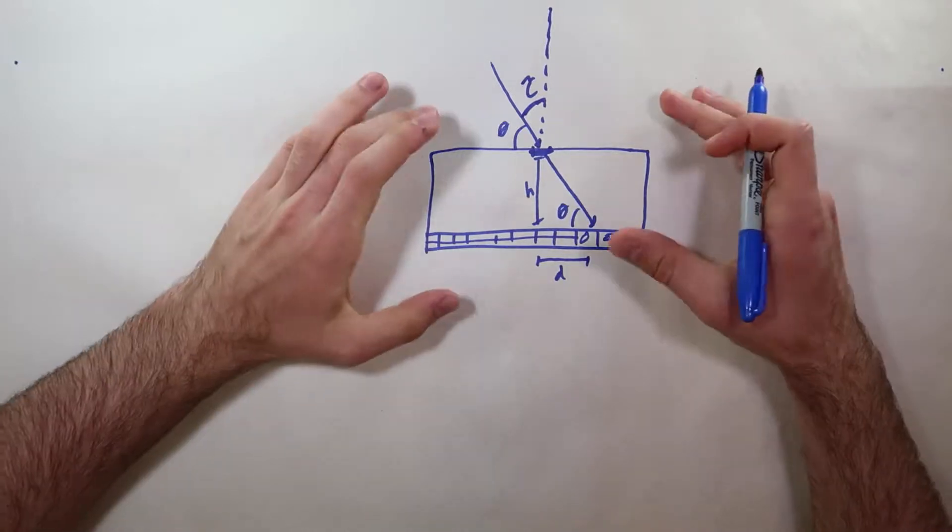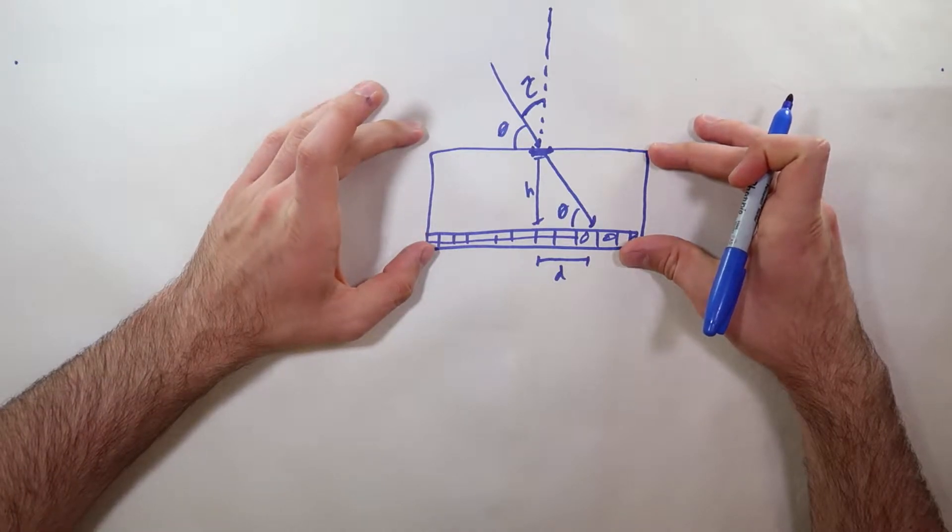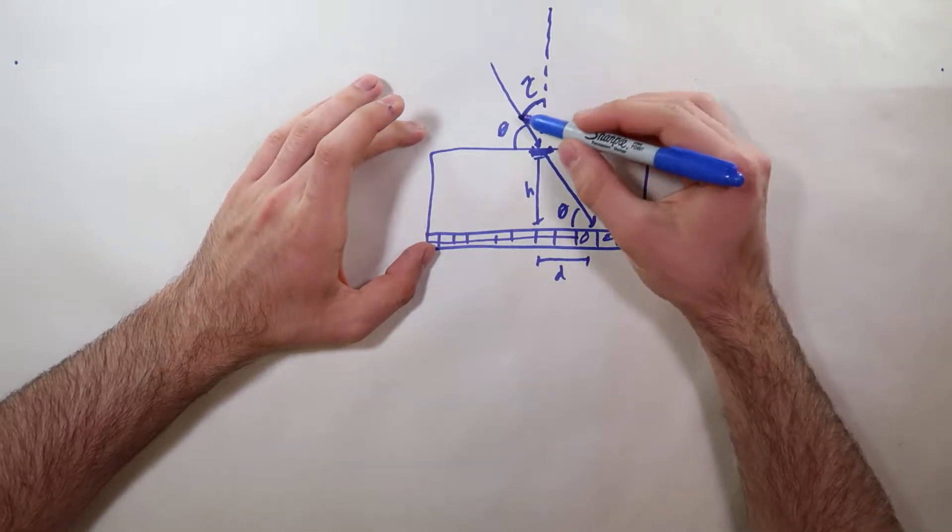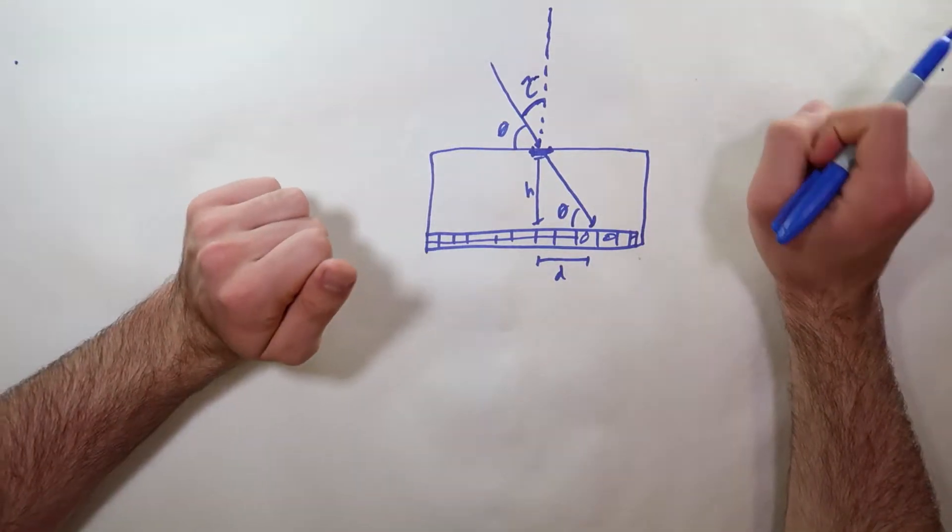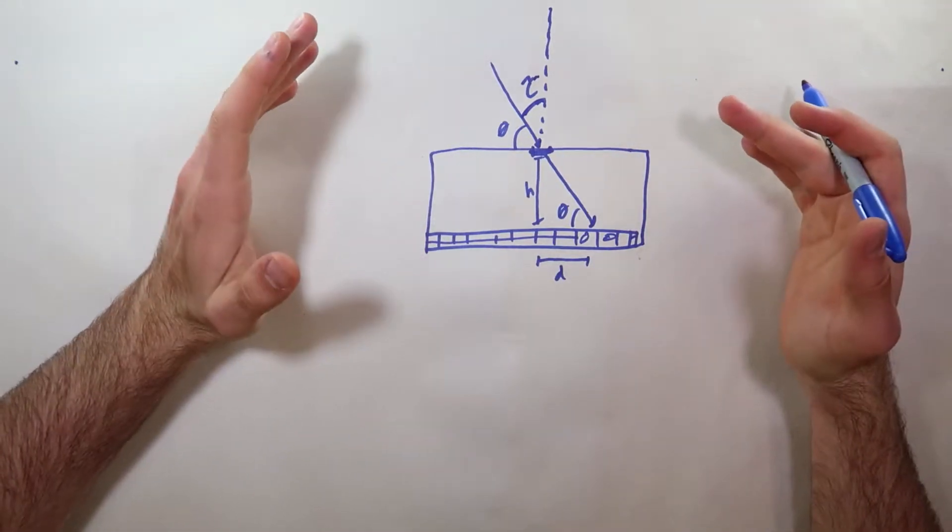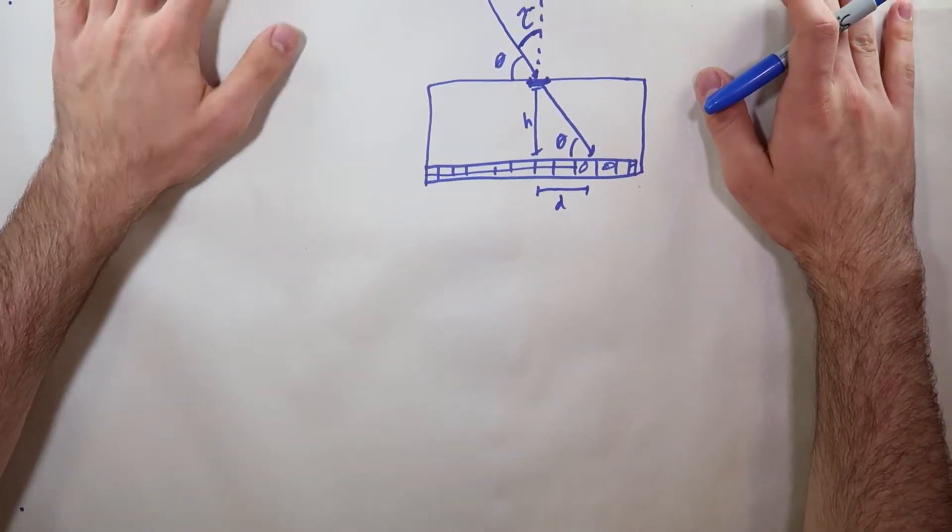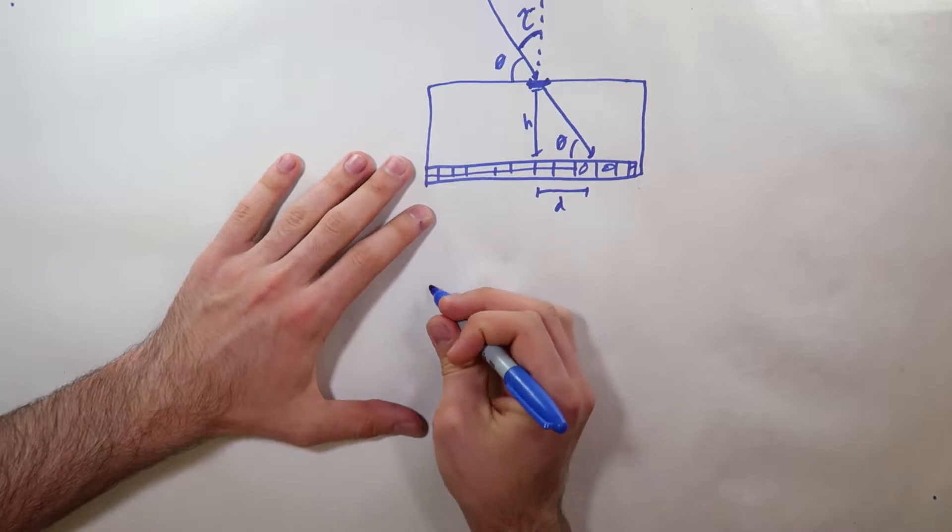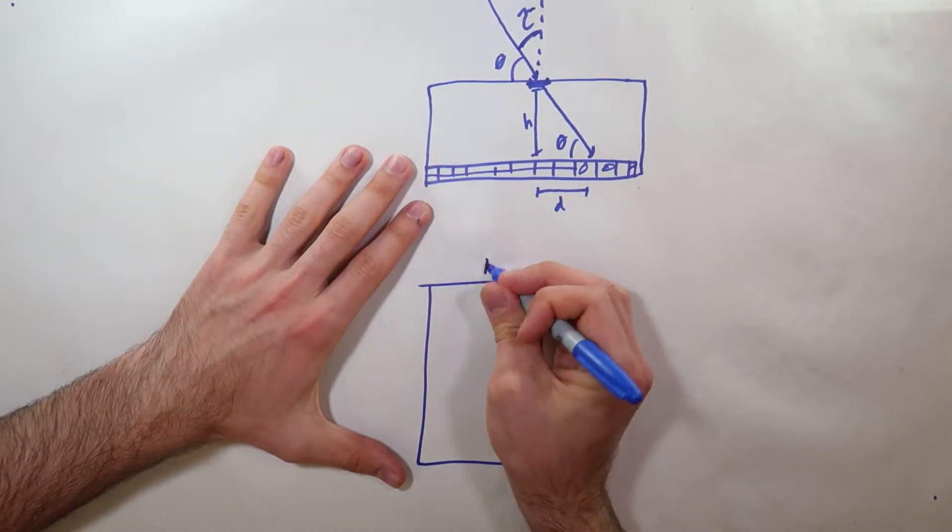If you think about it, this still only gives us data for one dimension. We're only going to be able to tell this one angle tau for the angle of incidence. In a real world application we're going to want to know more than that. Let's think about this box again from the top view.